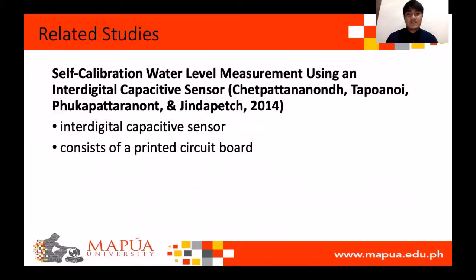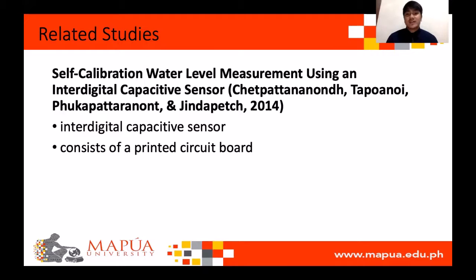Another article is the self-calibration water level measurement using an interdigital capacitive sensor. The researchers introduced an interdigital capacitive sensor that has high linear sensitivity, good repeatability, low cost, low energy, and simple installation. The interdigital capacitive sensor consists of a printed circuit board (PCB) that serves as a basis for the design of the water level measurement system.